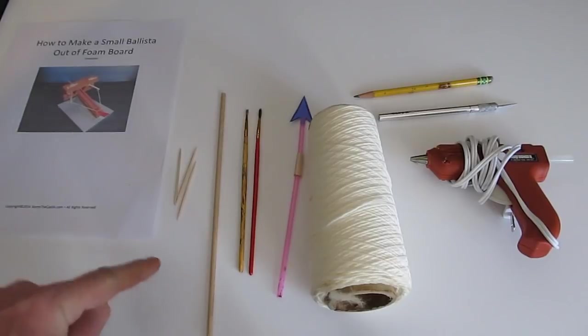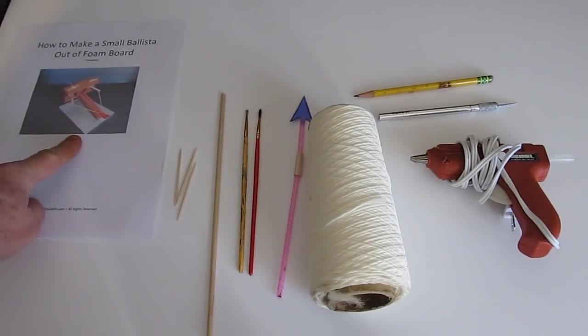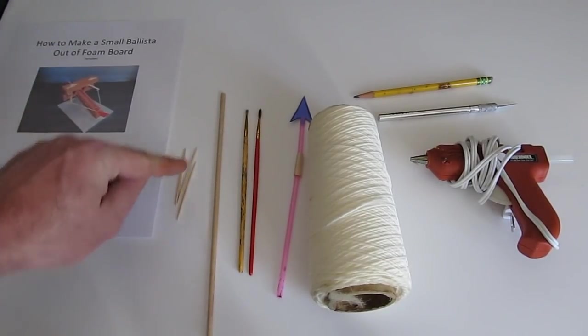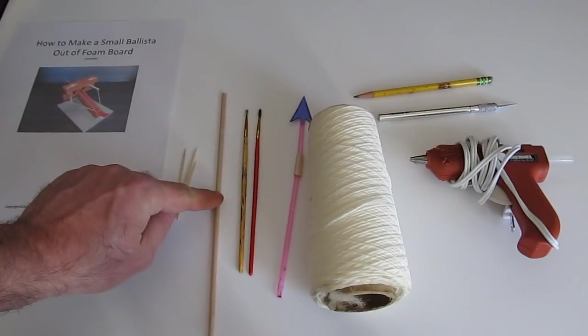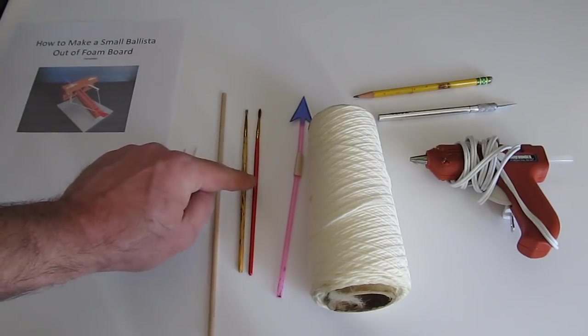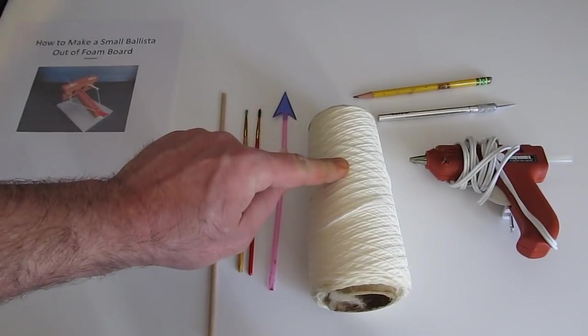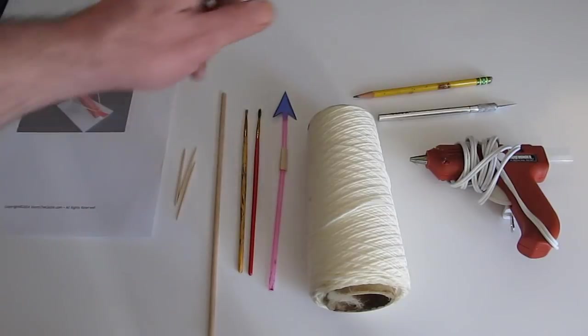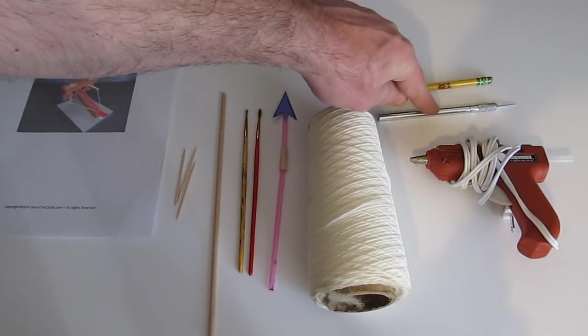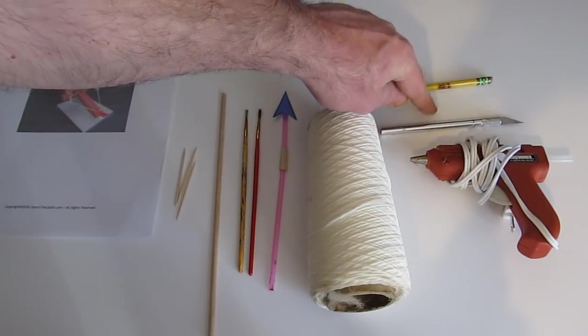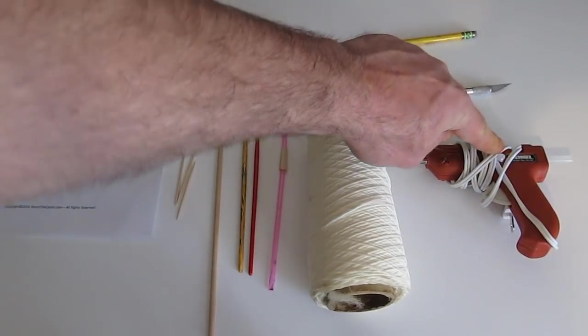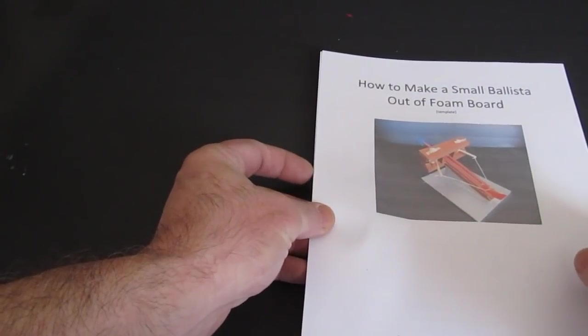Okay, let's get started. Let's look at the parts you need to make this project. A piece of foam board, the template, three toothpicks, ten inches of quarter-inch dowel or paintbrushes that you can use instead of the dowel, a straw, some string. And for tools: a pencil, something to cut with, and a hot glue gun or some kind of glue. So let's get into it.